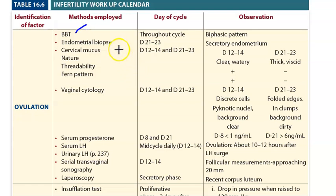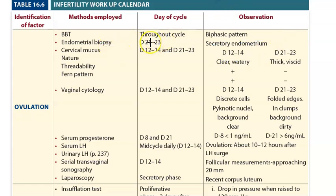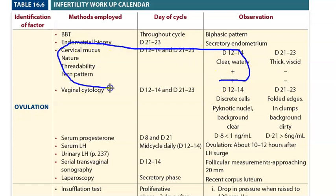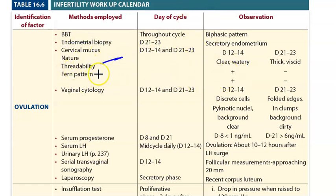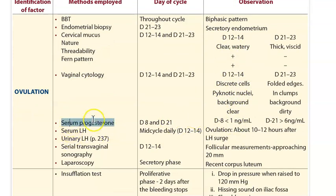Looking at the textbook table for checking ovulation: basal body temperature throughout the cycle - a biphasic pattern indicates ovulation. Endometrial biopsy on day 21 to 23 of the cycle should show secretory endometrium. Cervical mucus during ovulation, that is day 12 to 14, should be clear and watery - the fern pattern and threadability (spinnbarkeit) should be present. For vaginal cytology, pyknotic cells will be seen.